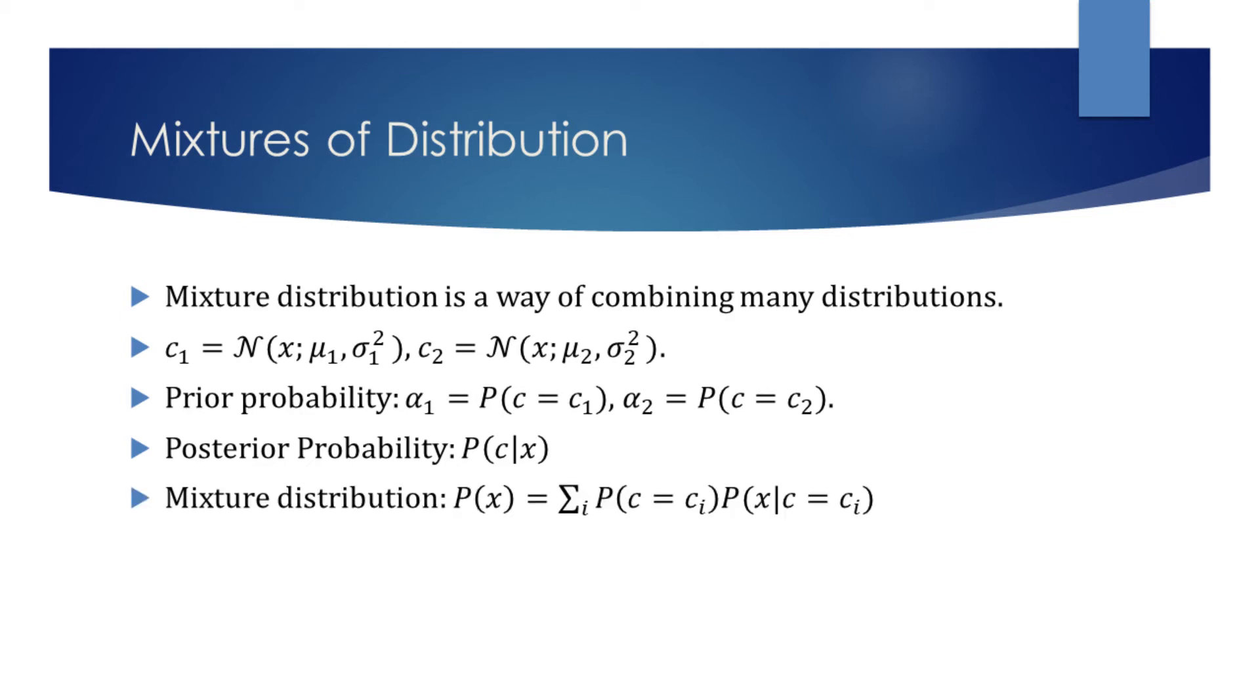Simply put, the mixture distribution first determines which component to use for sampling and then samples using that component.